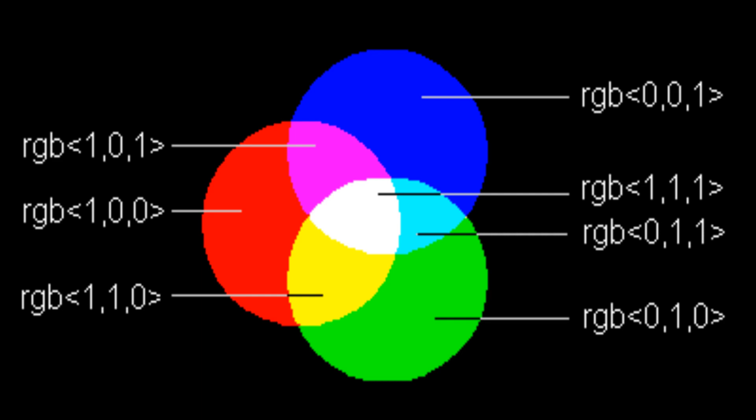Every time a ray bounces off of a surface, its color is multiplied with the color of the surface, and the more the ray bounces, the darker the color of the ray gets. This works perfectly in our favor since this fits the idea that the more the sound gets reflected, the quieter it gets.